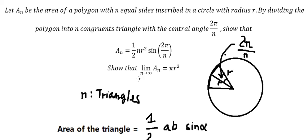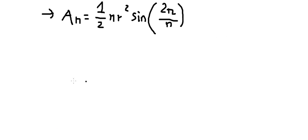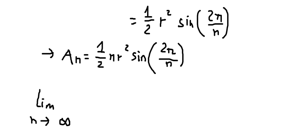Next we need to show that when n approaches positive infinity, A_n equals πr². We have the limit as n approaches infinity.